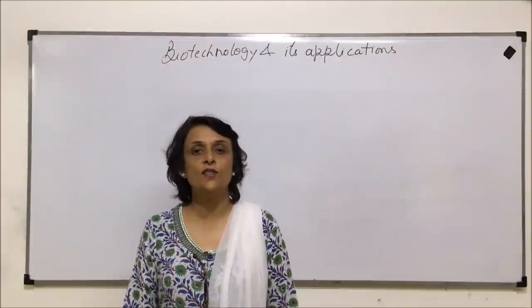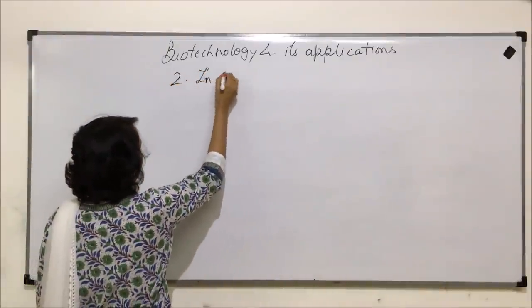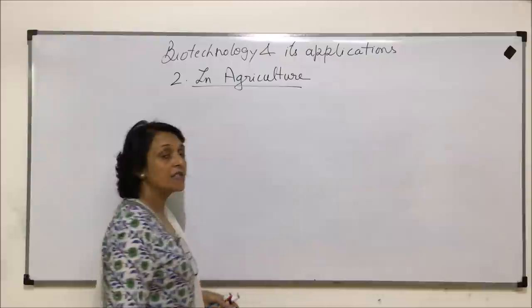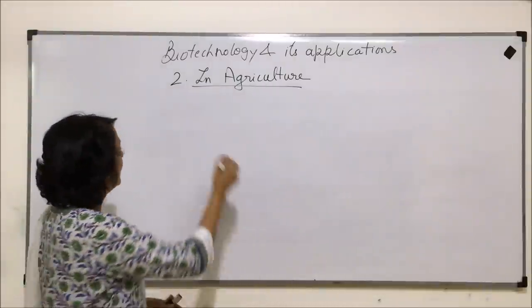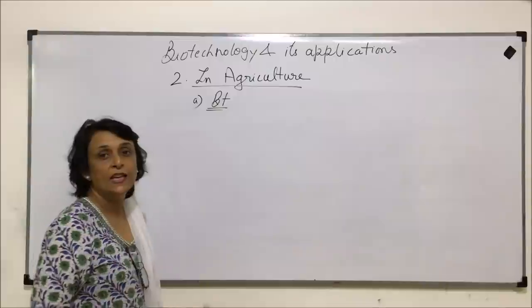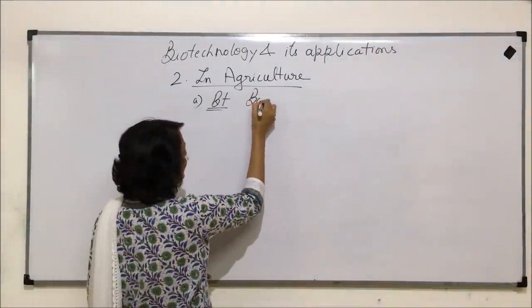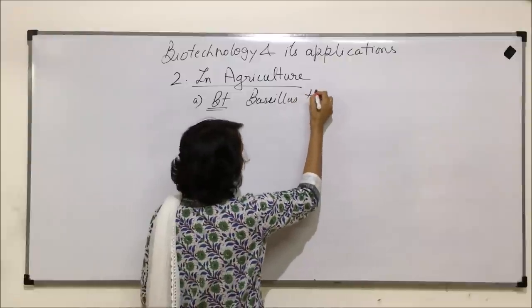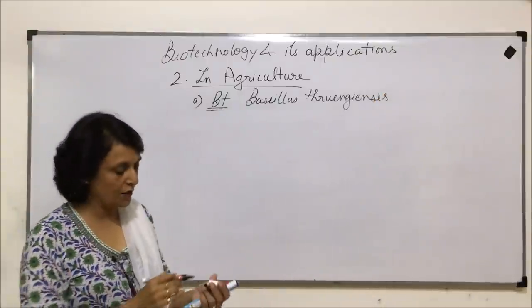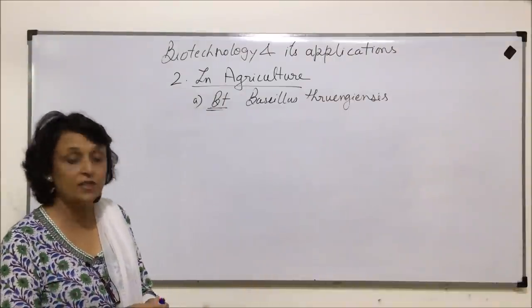In this video, we will discuss the applications of biotechnology or rDNA technology in the field of agriculture. There are many interesting things which scientists have achieved in this field. The first one is definitely BT, which stands for the name of the bacterium Bacillus thuringiensis. Let us first talk about what exactly this BT works like and then what is the thing that scientists have used.